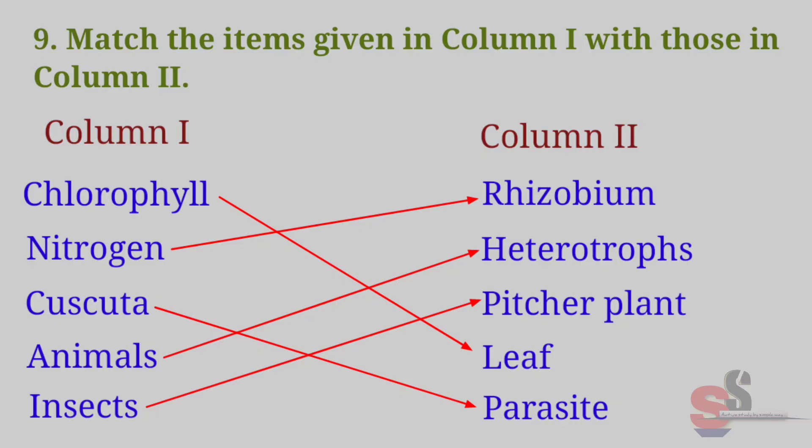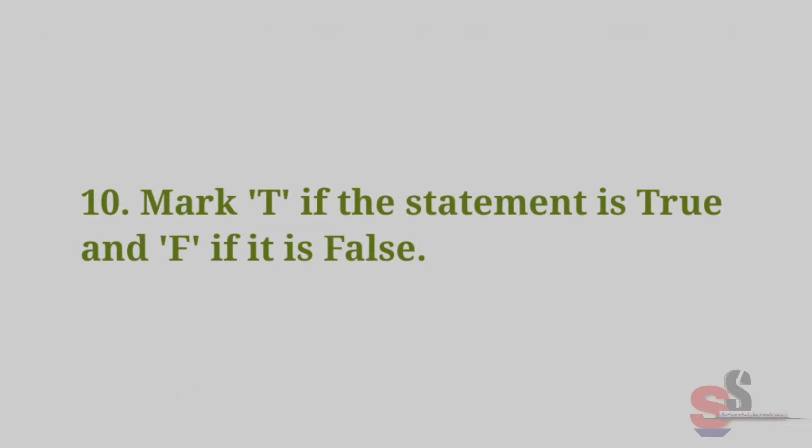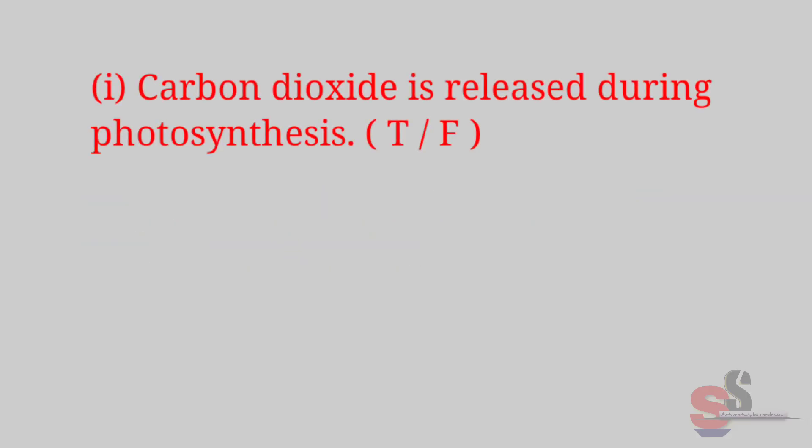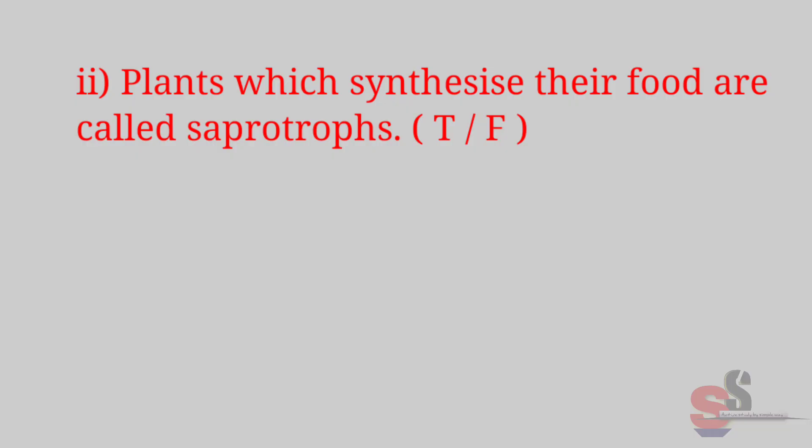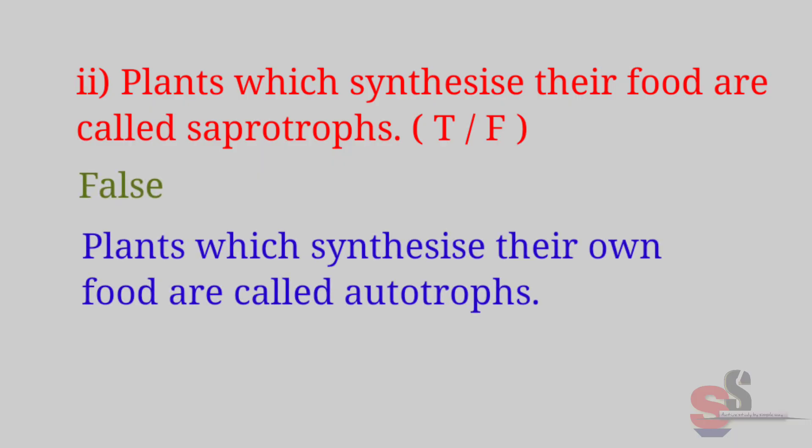Question 10: Mark T if the statement is true and F if it is false. (1) Carbon dioxide is released during photosynthesis. True or false? F—F means false. Oxygen is released during photosynthesis. (2) Plants which synthesize their food are called saprotrophs. True or false? F—F means false. Plants which synthesize their own food are called autotrophs.